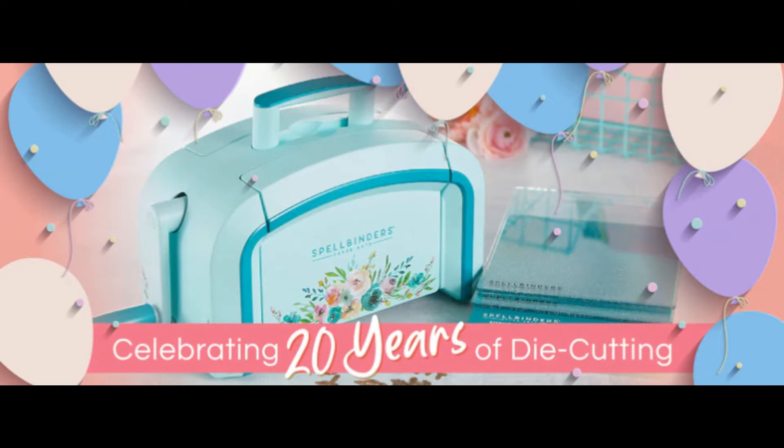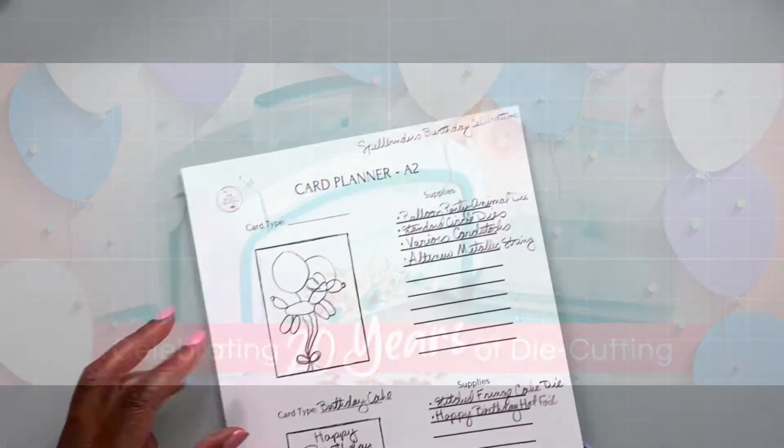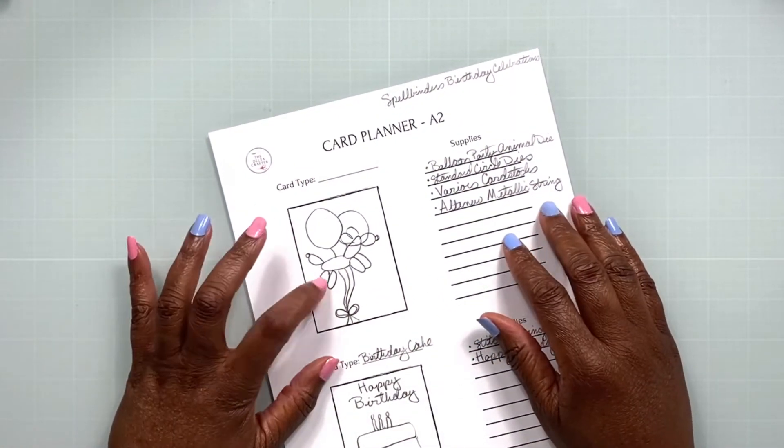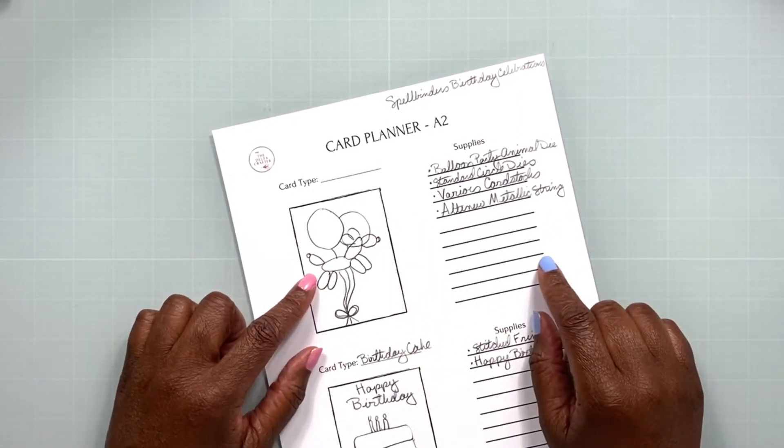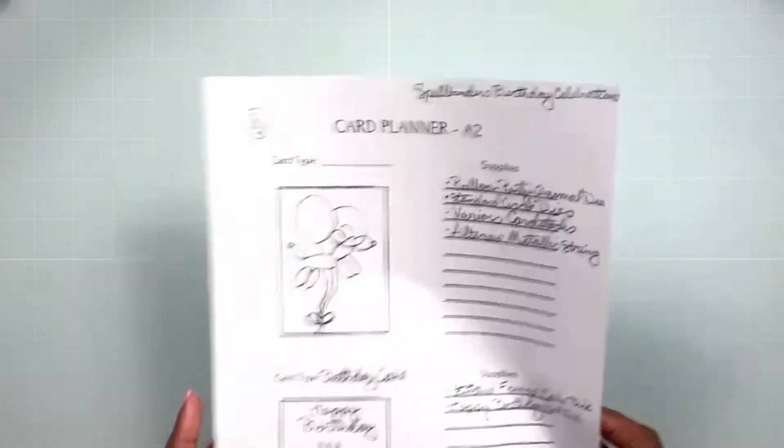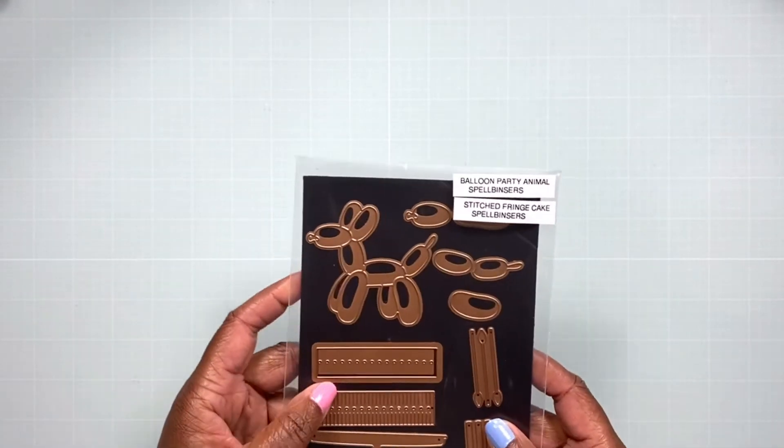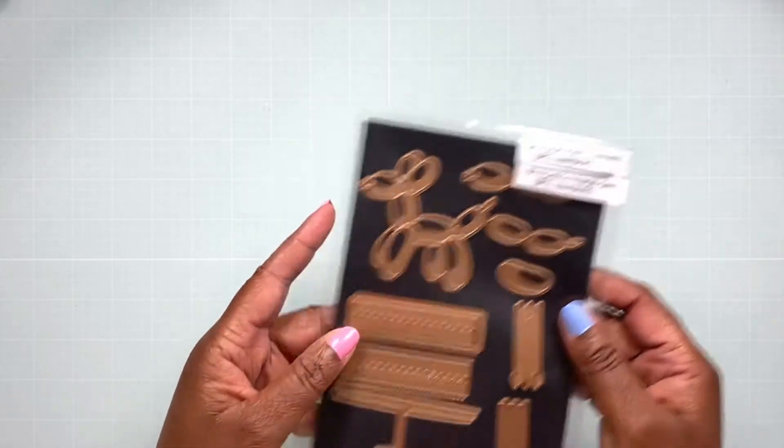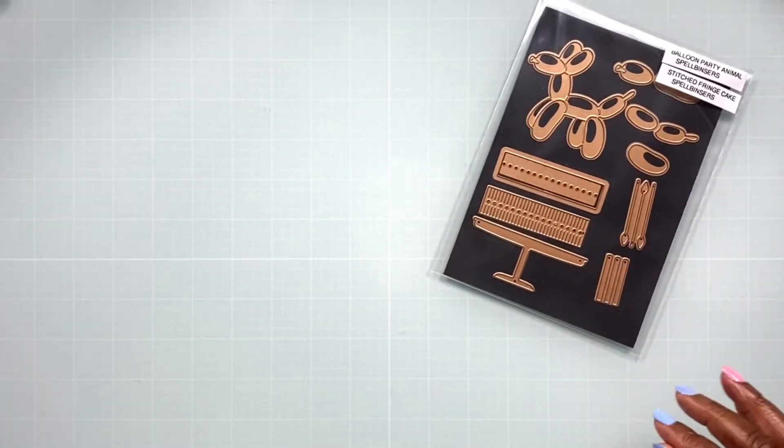I'm so happy to be able to partner with them for this release. Let's get into what I'm going to be creating today. Like I often do, I decided to sketch out my ideas on one of my card planner templates that can be found in my Etsy shop. I'll have that linked in the description below. I'm going to be working on the very first card that uses the Balloon Party Animal Spellbinders die set.